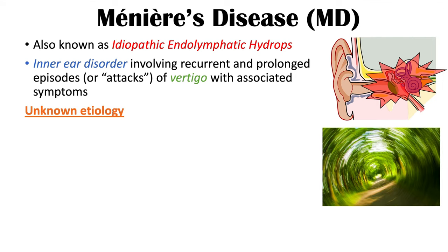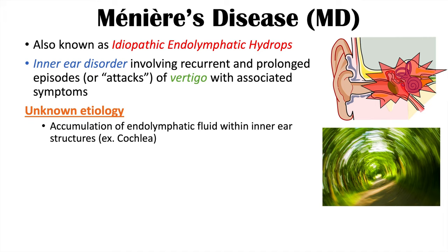Meniere's disease itself has an unknown etiology. There are some conditions that can cause these symptoms to occur, but if the underlying cause is known, we would refer to that as Meniere's syndrome. So Meniere's disease by definition has an unknown etiology. Although the etiology is unknown, the pathophysiology involves accumulation of endolymphatic fluid within inner ear structures like the cochlea.